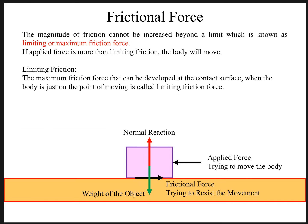That limit is basically called limiting friction. It is the maximum amount of friction, frictional force that can be developed at the contact surface when the body is just on the verge of moving. And after that point, the body starts moving and the friction breaks. So that maximum amount of friction is basically called the limiting friction.